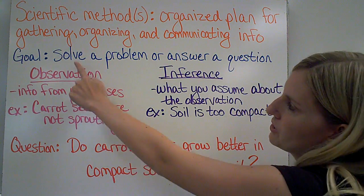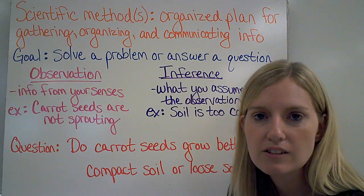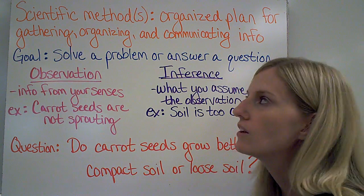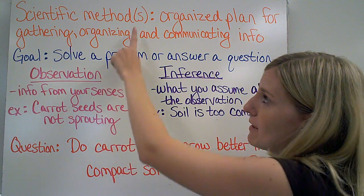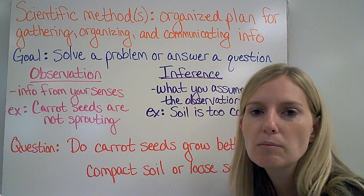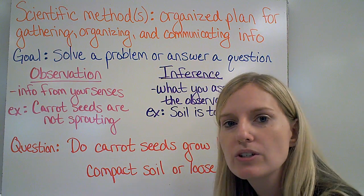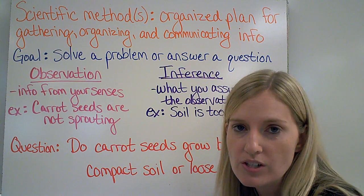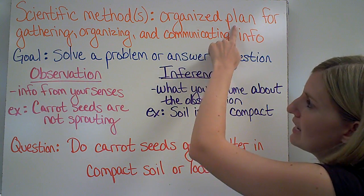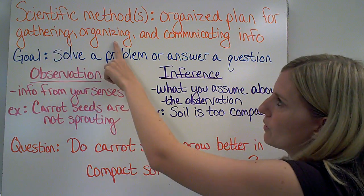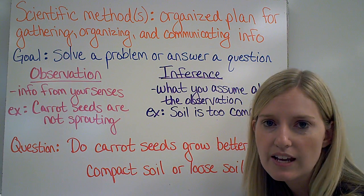Anytime we want to solve a problem or answer a question in science, we need to use what's called the scientific method. This is sometimes called scientific methods because the plan is not always exactly the same — you can do these steps in different orders. A scientific method in general is a plan to gather, organize, and communicate information. We call that information data.